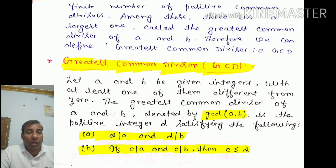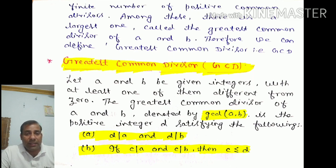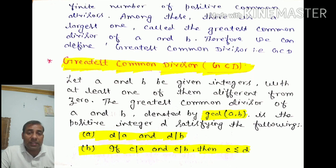Now we can define the greatest common divisor, that is GCD. Let A and B be given integers with at least one of them different from 0. Then the GCD of A and B, denoted GCD(A, B), is the positive integer D satisfying: first, D divides A and D divides B, meaning D is a common divisor of A and B; and second, if C divides A and C divides B, then C must be less than or equal to D. Then D is known as the GCD of A and B.